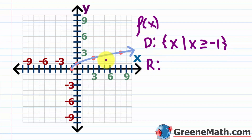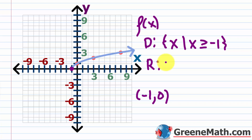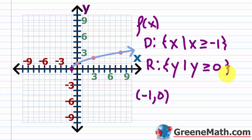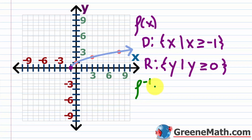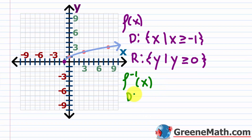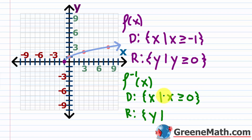What about the range? From the graph, the lowest point is negative one comma zero, and every other point goes up to positive infinity. So the range is the set of all y such that y is greater than or equal to zero. Because the x and y values get swapped in the inverse, the domain of f inverse of x becomes the set of all x such that x is greater than or equal to zero, and the range becomes the set of all y such that y is greater than or equal to negative one.